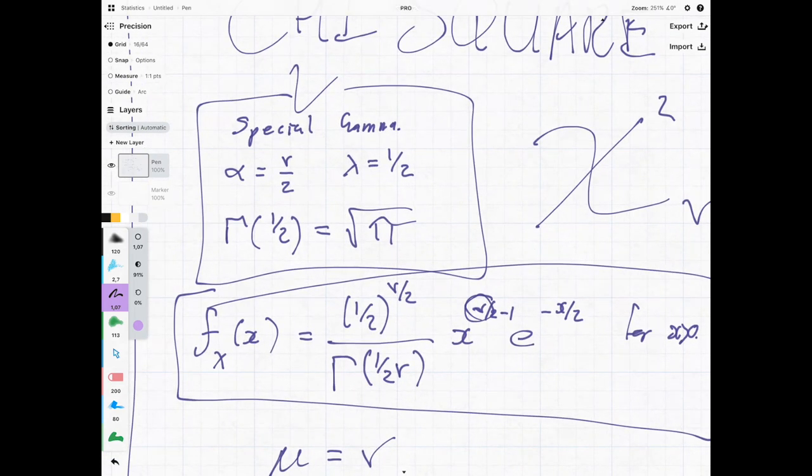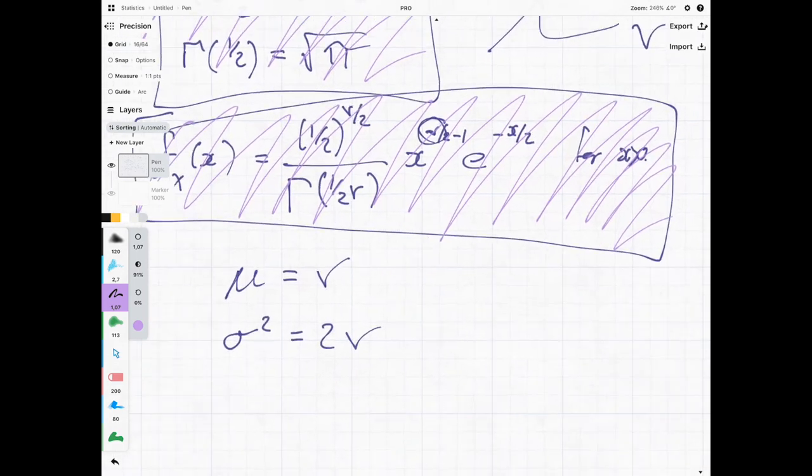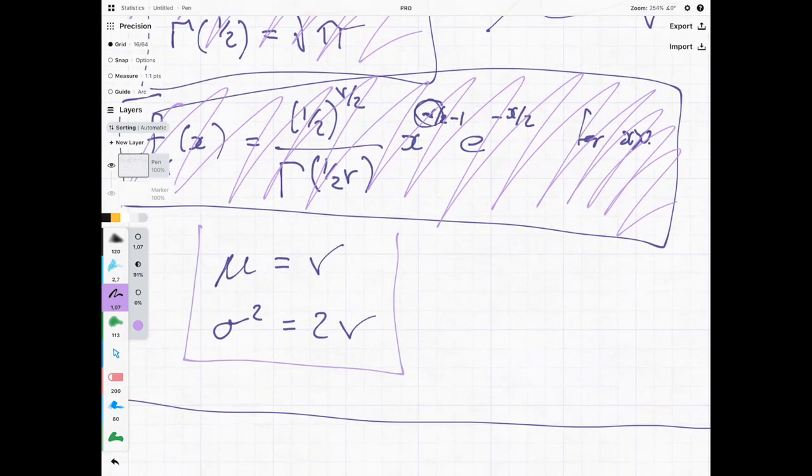And we know that the gamma function of a half is equal to the square root of pi. But don't worry. We don't need to know any of this crazy maths. For this part we don't need to know any of that craziness.